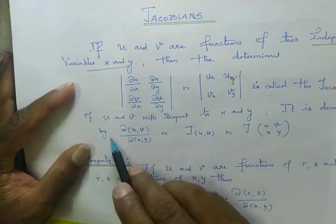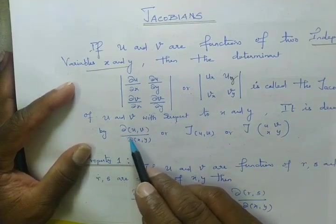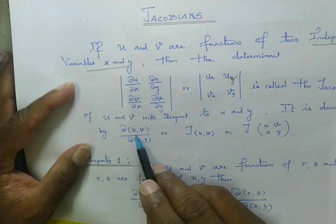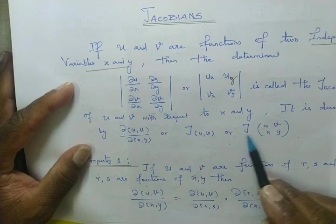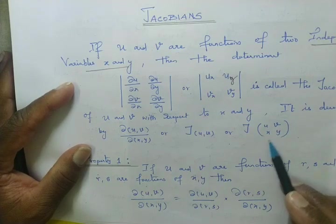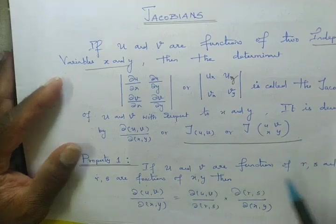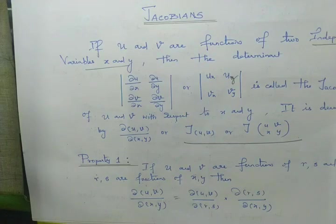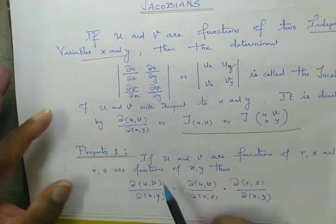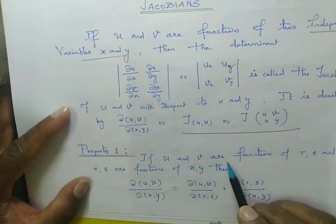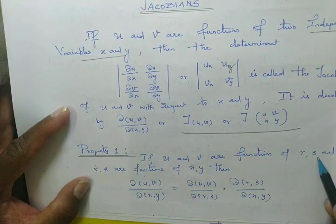It is denoted as the partial differentiation of u, v with respect to x, y — or the Jacobian of u, v with respect to x, y. This is the Jacobian. Now, if u and v are functions of r and s, and r and s are functions of x and y, what is the meaning?